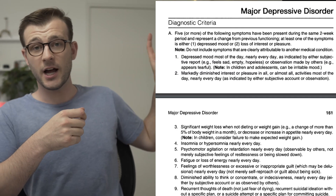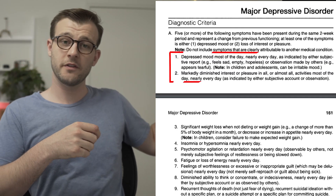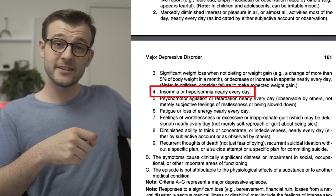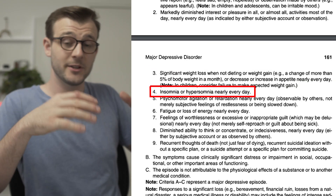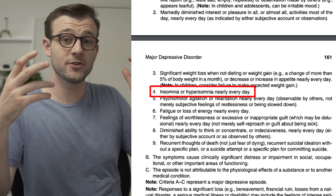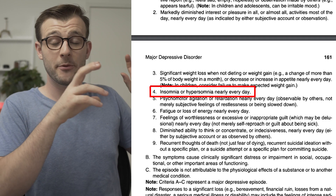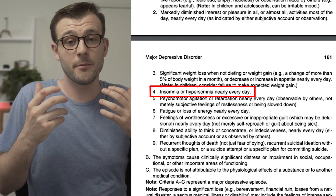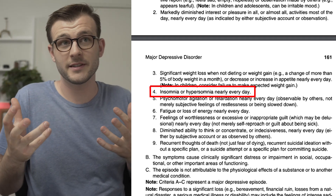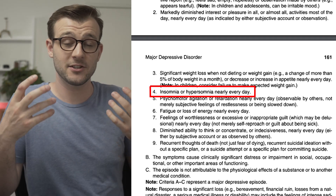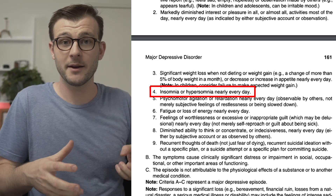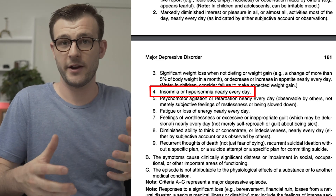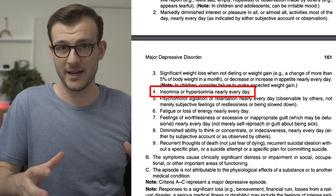Anhedonia and dysphoria are the first two of the nine symptoms. The other ones include change of body weight, and insomnia or hypersomnia — sleeping too little or sleeping too much. With insomnia in depression, the most common form is early morning wakening: they can actually fall asleep fine but then usually wake at 2am or 3am and can't get back to sleep.